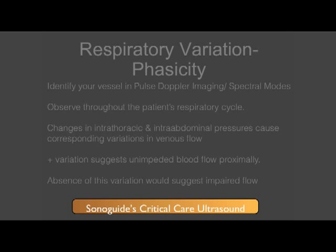The technique of respiratory variation is very similar to augmentation. Again, you will start by locating the vein in brightness mode and then change to the pulsed wave Doppler imaging modality. Adjust the sample gate to be in the center of the vessel. Now, simply watch for change in flow during the patient's respiratory cycle. This can be done on a patient breathing spontaneously or even on a ventilator. A normal scan will show a small amount of augmentation in venous flow through the respiratory cycle. However, this will be absent when there is proximal resistance to flow, such as the presence of a DVT.